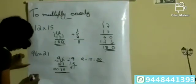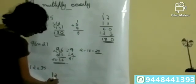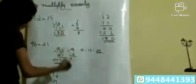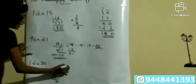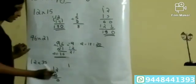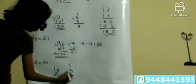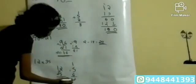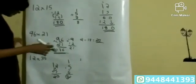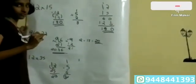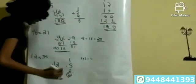Next example: 12 into 35. Write it as 12, 35. 5 into 2 is 10 — write 0, carry 1. Cross multiplication: 5 into 1 is 5, and 3 into 2 is 6. Add: 1 plus 5 is 6, plus 6 is 12 — write 2, carry 1. Then 3 into 1 is 3, plus carry 1 is 4. So the final answer is 420.